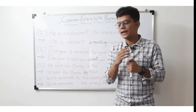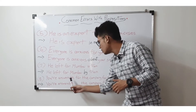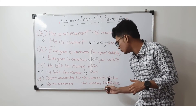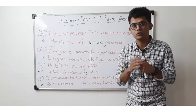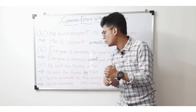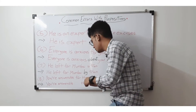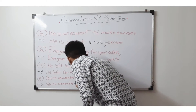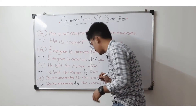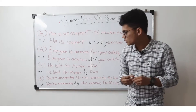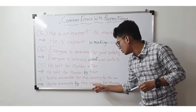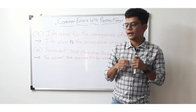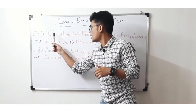Eighth sentence: 'You are answerable for the company for this loss.' That is wrong. The right way is: 'You are answerable to the company for this loss.' — 'to' is the correct preposition with 'answerable.'